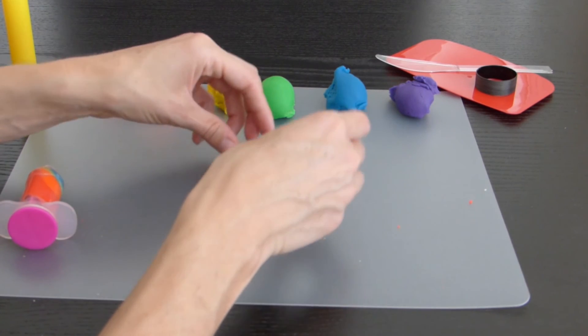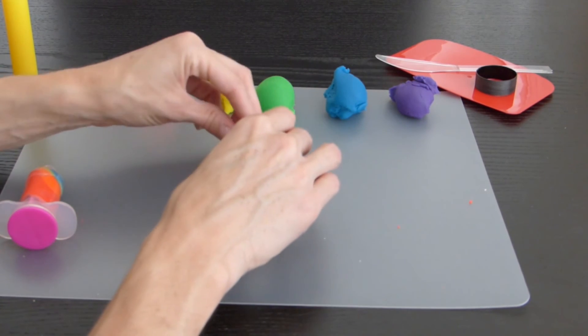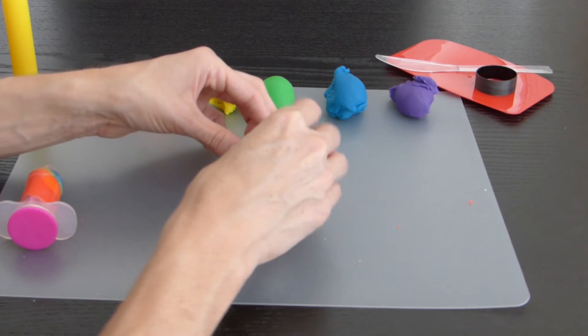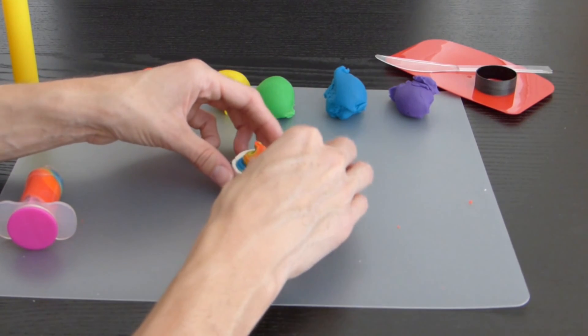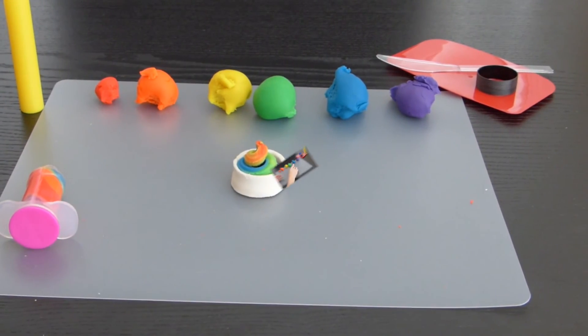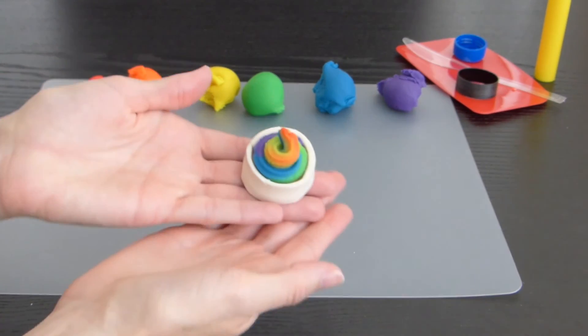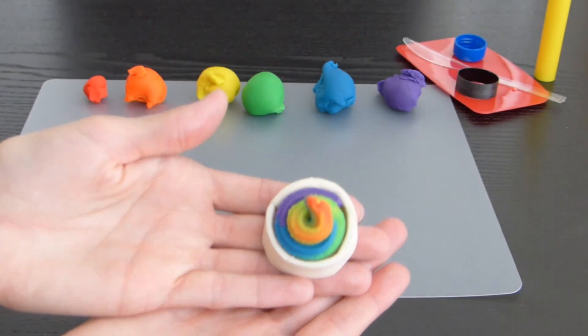Now just roll it up in your bowl. And there you have your rainbow play-doh ice cream in a bowl.